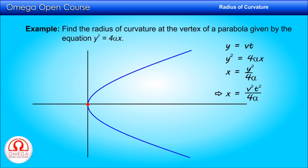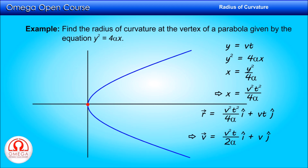The radius of curvature is a property of the curve, not the motion. So, the radius of curvature at any point on the curve will be the same irrespective of the nature of motion or velocity of the particle. So we could have assigned any value to y or x as long as x and y satisfy the equation of the curve. Thus, the position vector of the particle with time is given by (v²t² / 4α) î + vt ĵ. Differentiating the position vector with respect to time, we get velocity vector = (v²t / 2α) î + v ĵ. Differentiating with respect to time once again, we get acceleration vector = (v² / 2α) î.